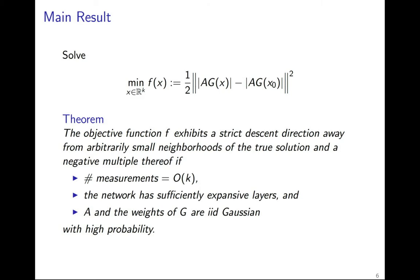Our main result illustrates that the empirical risk objective has favorable geometry for gradient methods with optimal sample complexity. In particular, the objective function has a strict descent direction outside of two arbitrarily small neighborhoods of the minimizer and a negative multiple thereof,